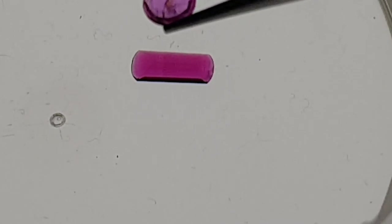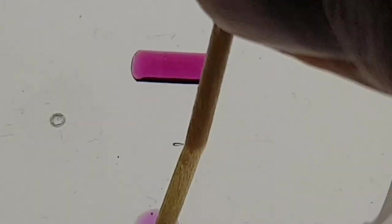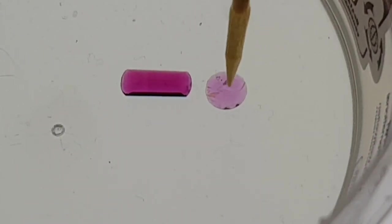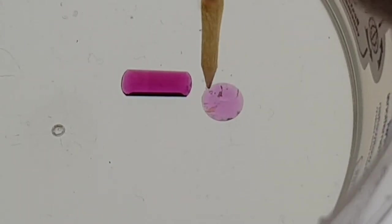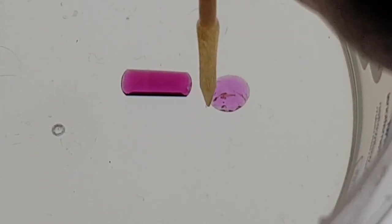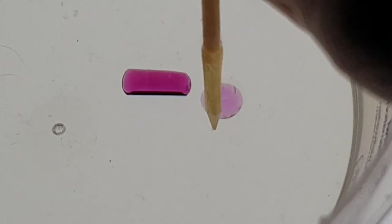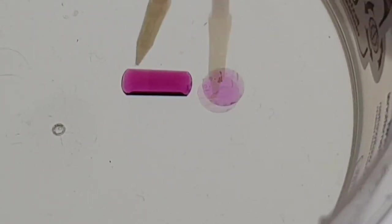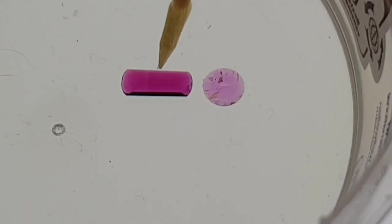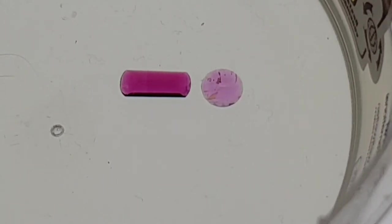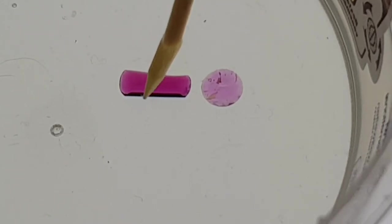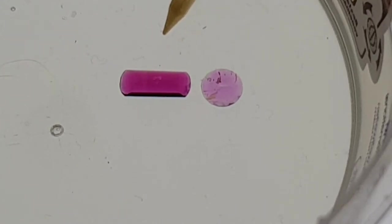Next example: here we also have stripes — brighter stripes but not curved stripes. We have brighter and darker areas which means we have color zoning, straight lines, and inclusions. This is a natural ruby, and the difference in color is very clear. Remember: straight brighter stripes are a good indicator for natural rubies, while curved brighter stripes are the best indicator for Verneuil synthetic rubies.